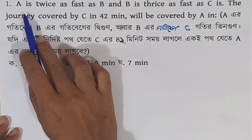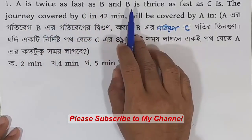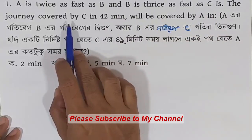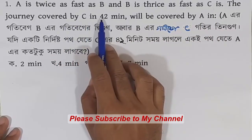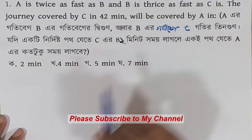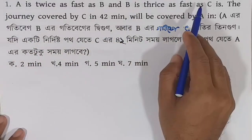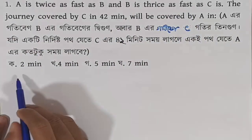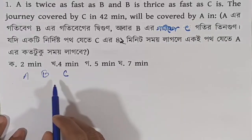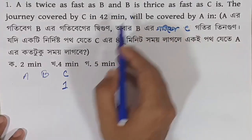This is a question involving the speeds of A, B, and C. C's time is 42 minutes. Let's set up the speed ratios. If C's speed is 1, then B's speed is 2 (since B is twice as fast as C), and A's speed is also 2 times B, giving us the ratio 1, 2, 2.